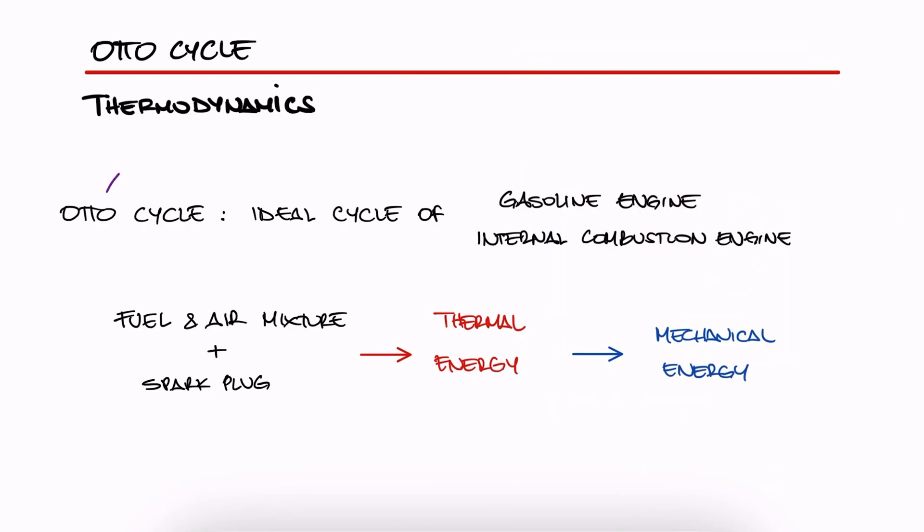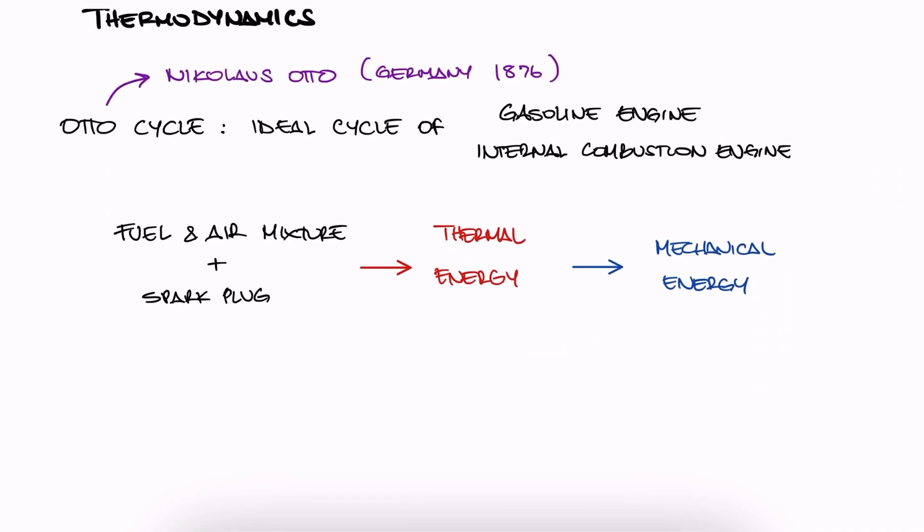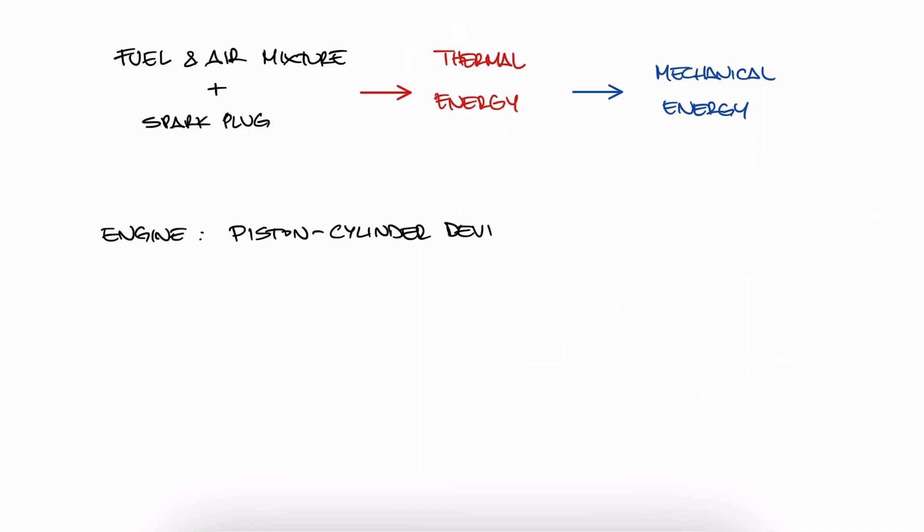The name of the cycle comes from Nicolaus Otto, who built a working engine in Germany in 1876. The engine consists of a piston that moves four times, usually called strokes, within the cylinder.